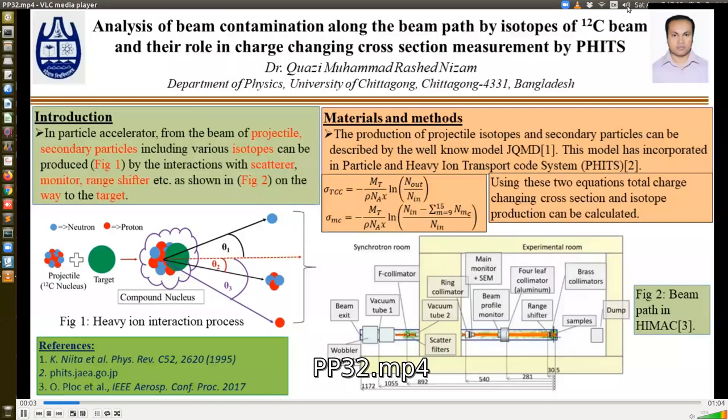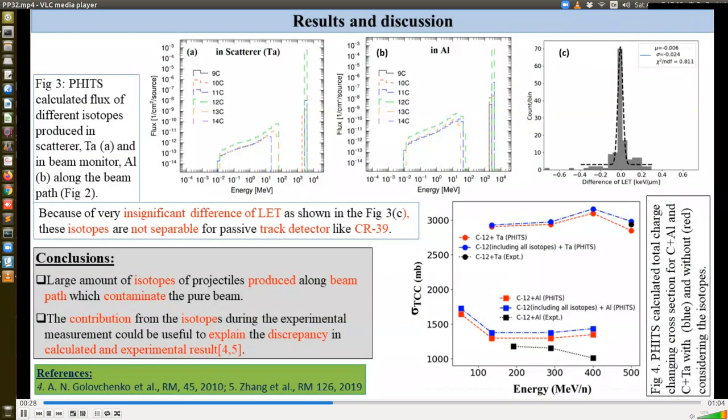Assalamualaikum. I am Rashan Zaman, working as an associate professor in the Department of Physics, University of Chittagong. Welcome to my work. In particle accelerator, when the beam of projectile is traveling to the target, it interacts with the interior materials and produces isotopes and secondary particles, as shown in figure 1, along the beam path, as shown in figure 2. These secondary particles and isotope production can be modeled by JQMD, which is incorporated in Monte Carlo simulation code FLUKA. The production cross-section for secondary particles and isotopes can be calculated by using these two equations, respectively. Figure 3A and B show the flux of different carbon isotopes as a function of energy, those produced by the interaction with tantalum and aluminum, respectively, calculated by FLUKA. We can see that the carbon 11, 10, and 13 have a higher flux with sufficient energy to contaminate the measurement results. As shown in figure C, these isotopes have insignificant differences in LET, so detectors like silicon detector cannot distinguish the isotopes and projectiles. In this study, we wanted to know how these isotopes can play the role during experimental measurement. Figure 4 shows the total charge-changing cross-section as a function of energy. If we consider the production cross-section of isotopes, then the total charge-changing cross-section becomes higher, as shown by the blue line, than without considering isotopes, as shown by the red line. So we can conclude that the contribution from the isotopes could be useful to explain the discrepancy in calculated and experimental results, especially in the lower energy region. Thank you very much.